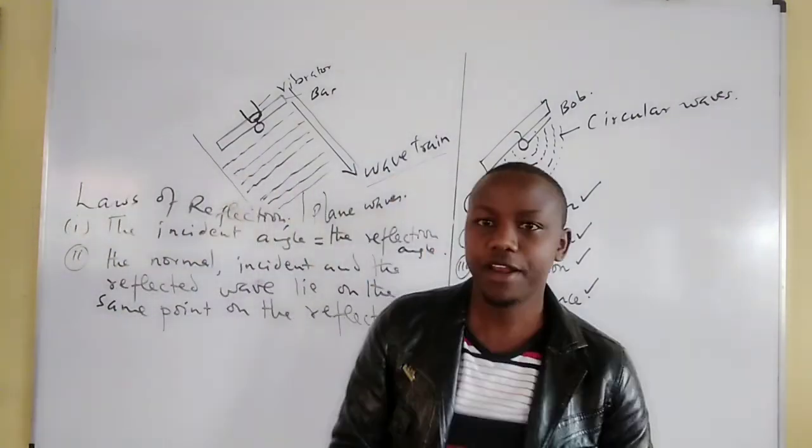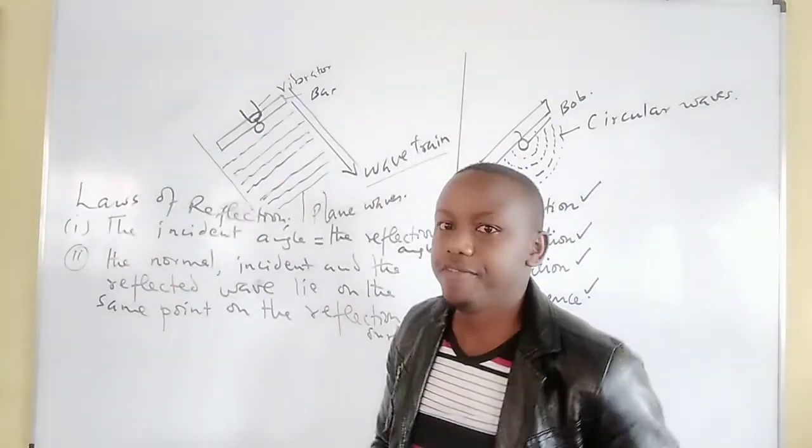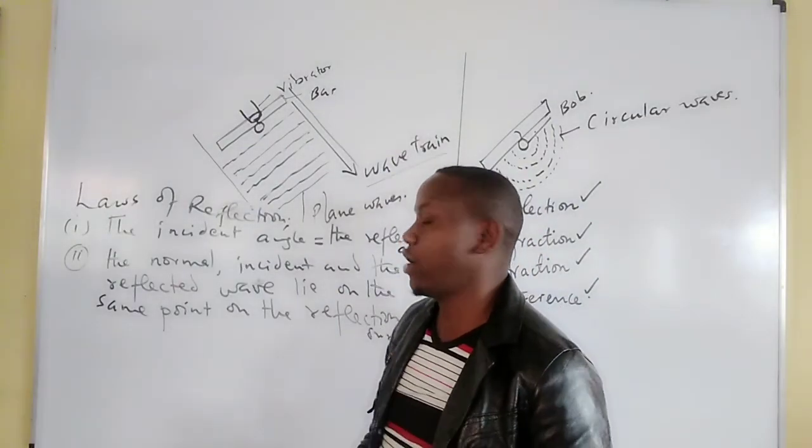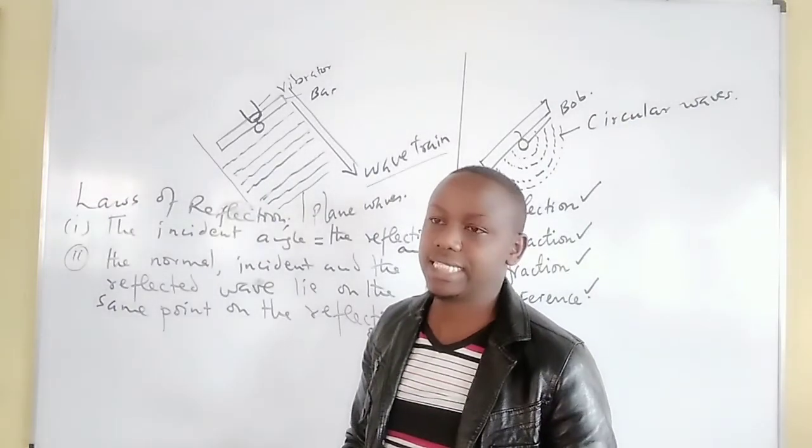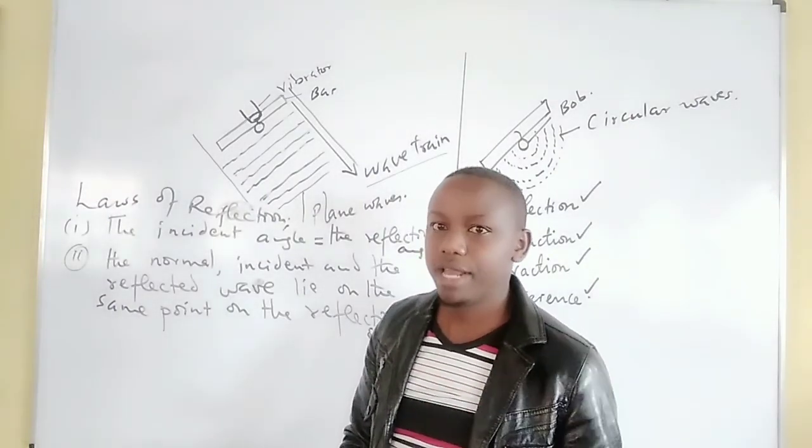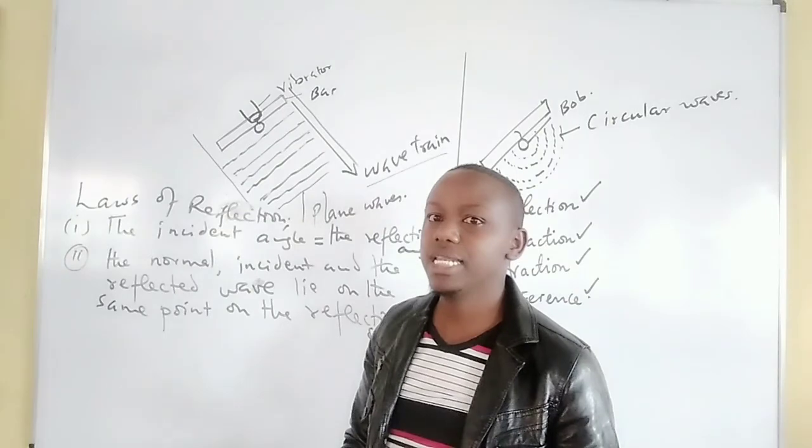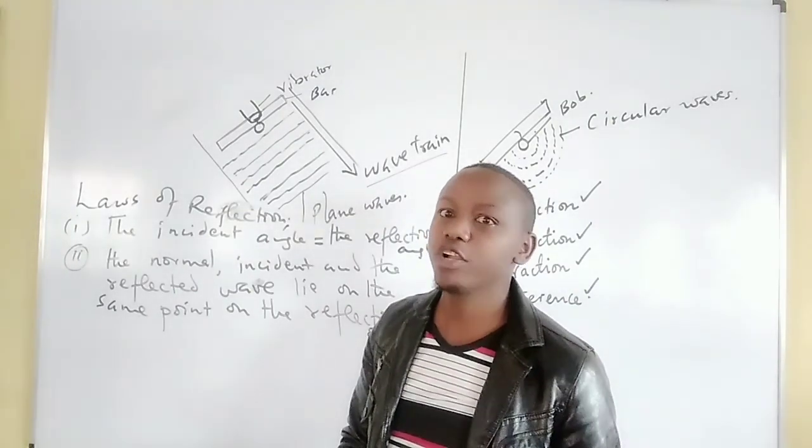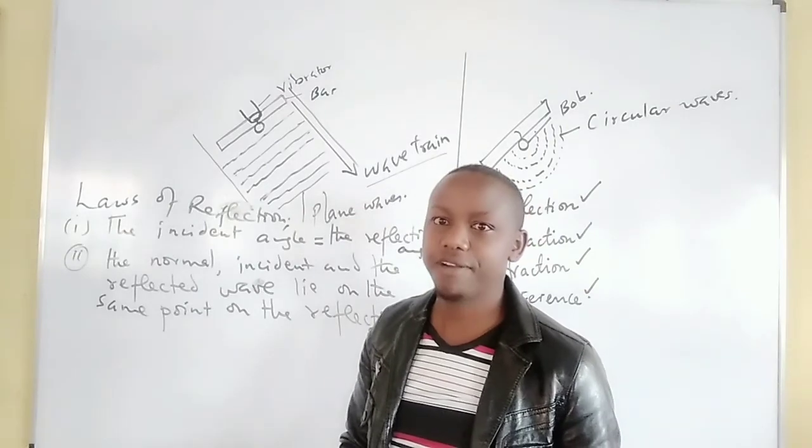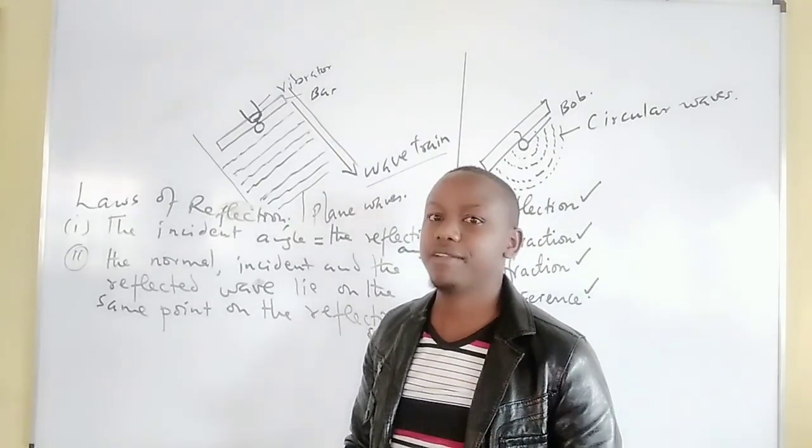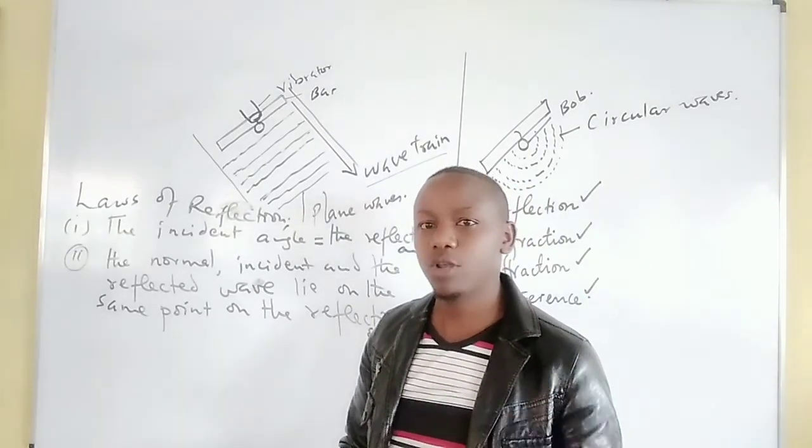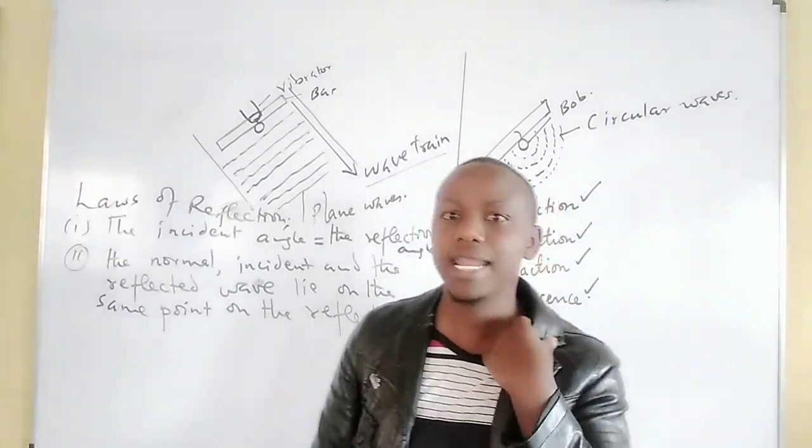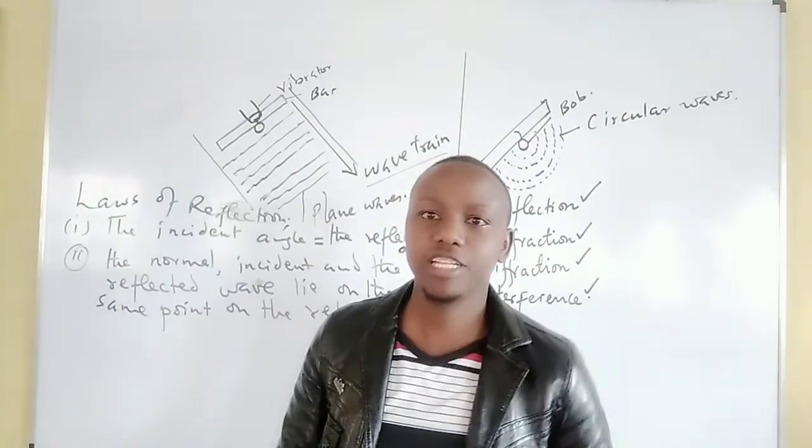We are going to study reflection of waves on different reflectors, on different reflectors. The circular reflectors, the plane reflectors, on the circular ones, or the curved ones. We are going to study both in concave reflectors and in convex reflectors. For both circular waves and the plane waves, we are going to see each characteristic and how they proceed forth after the reflection.